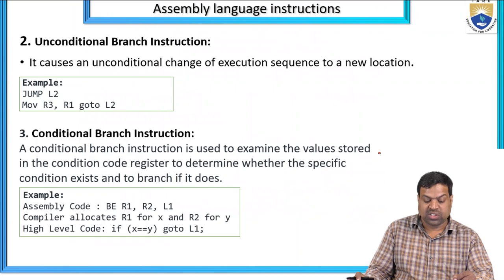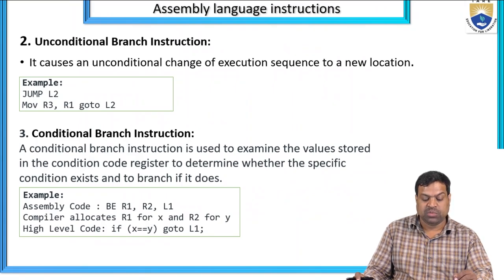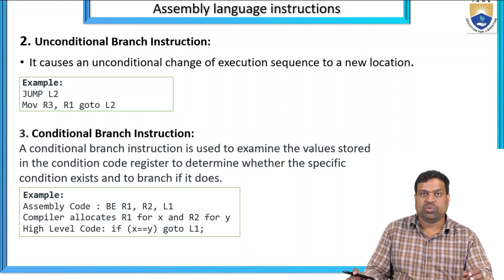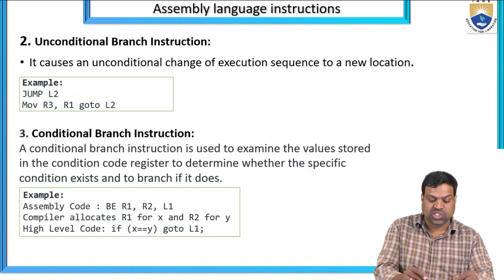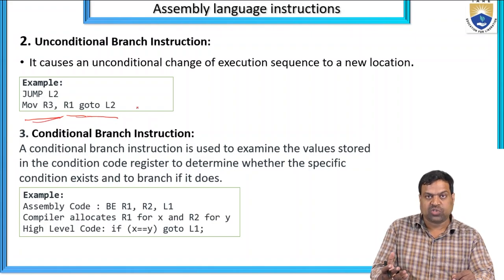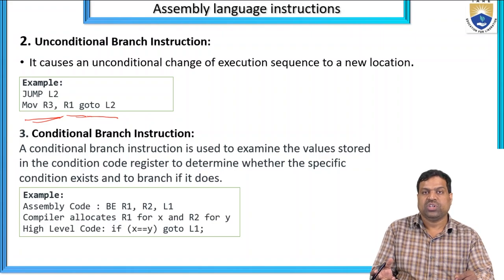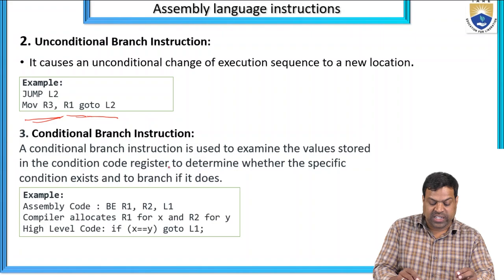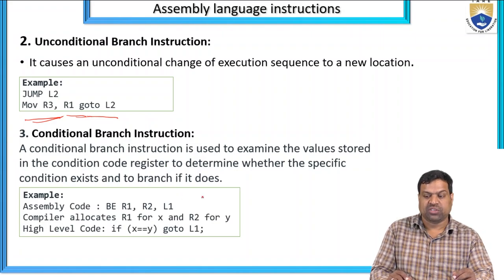Comparing means: A less than B, A greater than B, or A equal to B — that is a comparison. Unconditional branch instruction means there is no condition for the operation. It causes an unconditional change of execution sequence to a new location — for example: JUMP L2, MOV R3, R1, GO TO L2 — there is no IF condition and no WHILE condition.